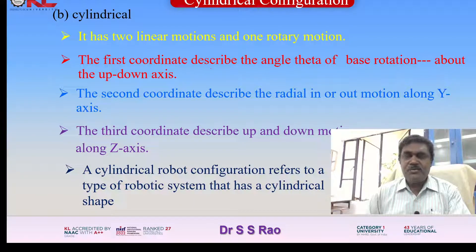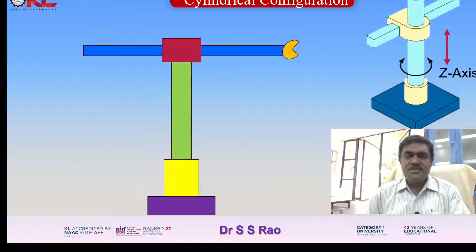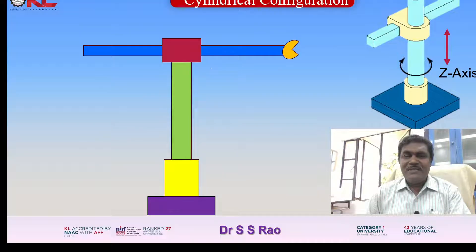A cylindrical robot configuration refers to a type of robotic system that has a cylindrical shape. Now look at the animation of how this end effector will cover the space. It's easy to understand with the help of these animations.